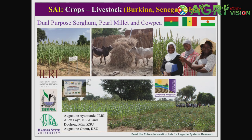The first example is crop-livestock interaction in West Africa — Burkina, Senegal, and Niger. For smallholder farmers, both crops and livestock are very critical. We are looking at dual-purpose crops: grain for human consumption and biomass for livestock. We have dual-purpose sorghum, dual-purpose pearl millet, and dual-purpose cowpea being promoted among smallholder farmers. The grain is also high in zinc and iron for nutritional benefit. That's one innovation addressing food and nutrition security while also supporting livestock.